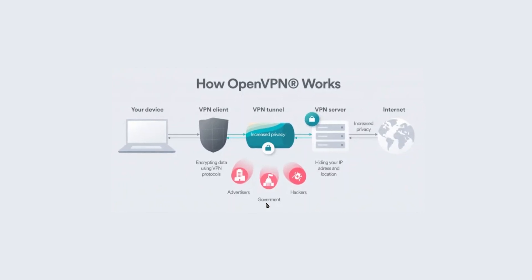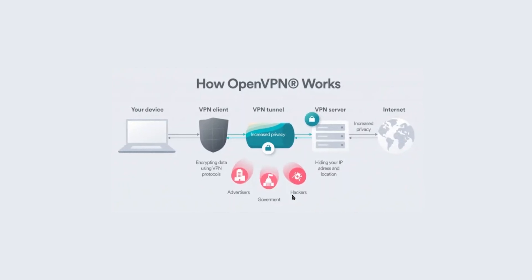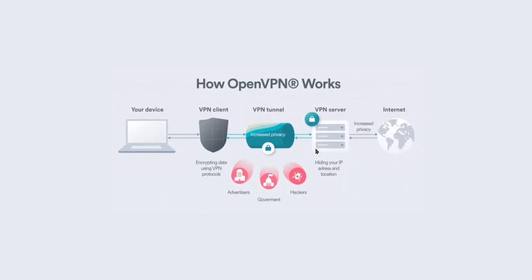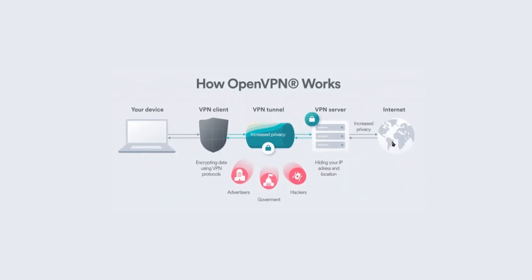Nobody — whether it's the government, hackers, your internet service provider, or even the VPN itself — is going to be able to access that information. From there, your data will make its way over to the VPN server which you select in the VPN itself, and then it will go over to the internet. Any data coming back will go backwards through the same steps.